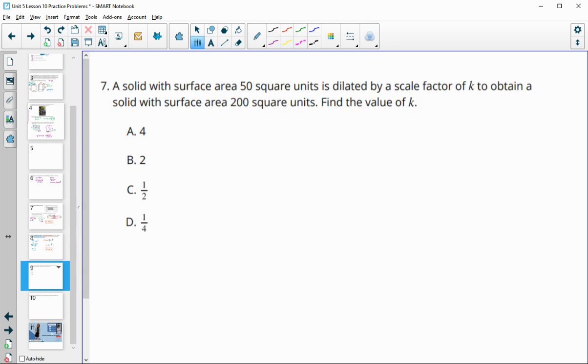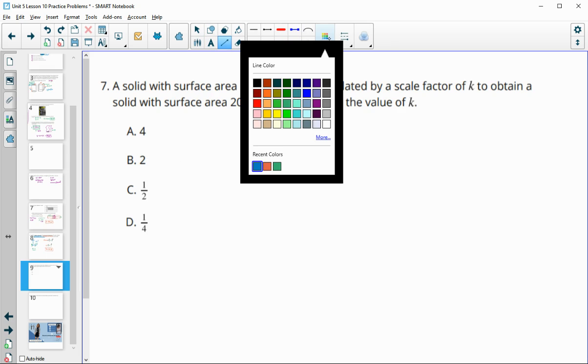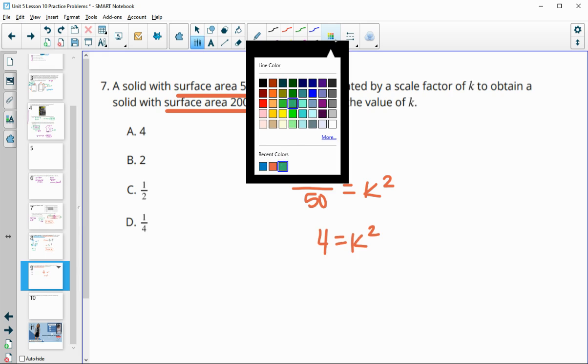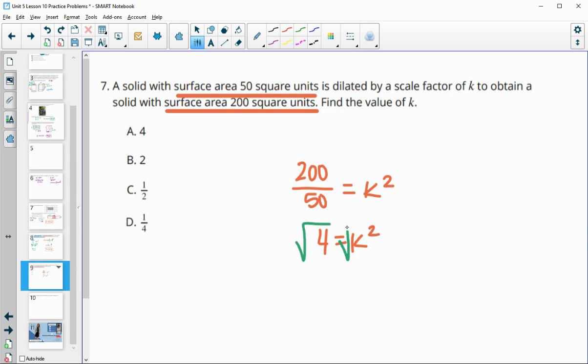Number 7, we have a solid that has a surface area of 50 units squared. It's dilated by some scale factor to get a new surface area of 200. What's the scale factor? When we compare areas, new area to original area, we get our k squared value. So 200 divided by 50 is 4. This is our k squared. To get our scale factor, we square root both of those and we would get a scale factor of 2.